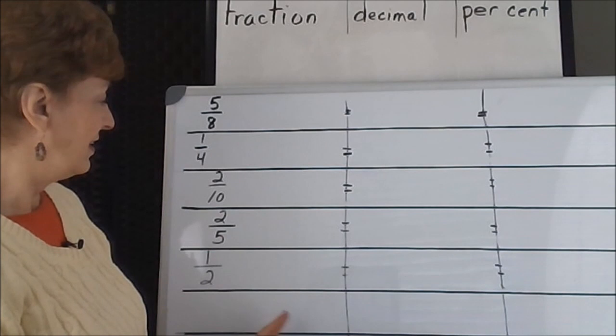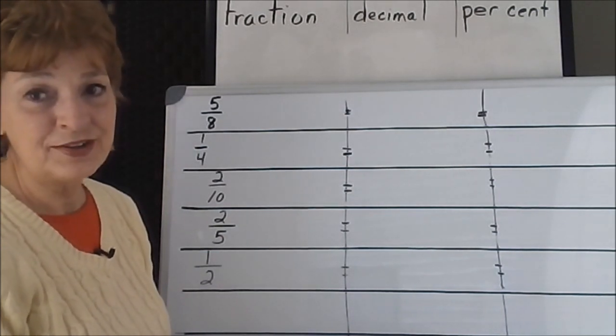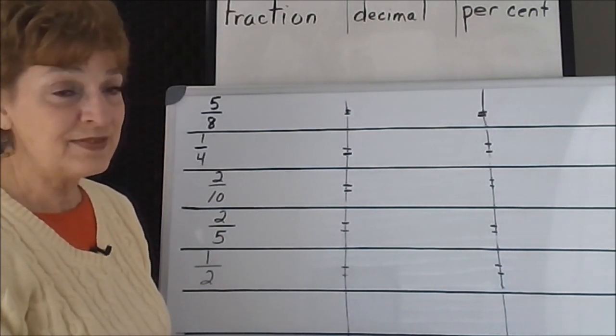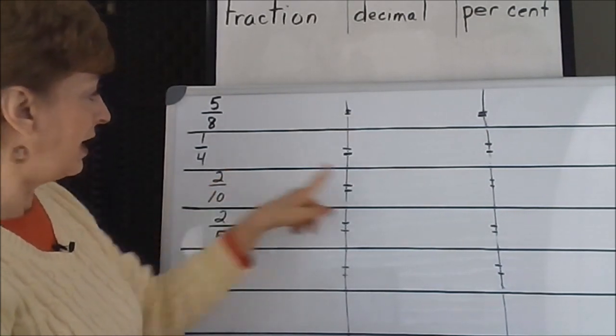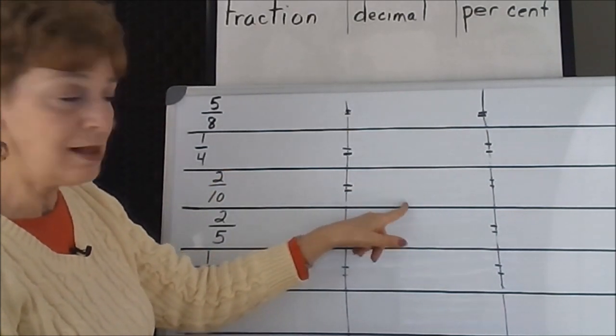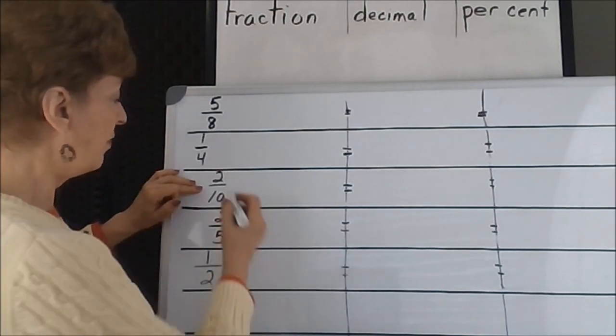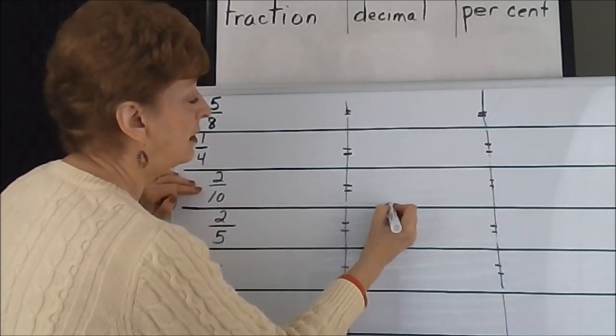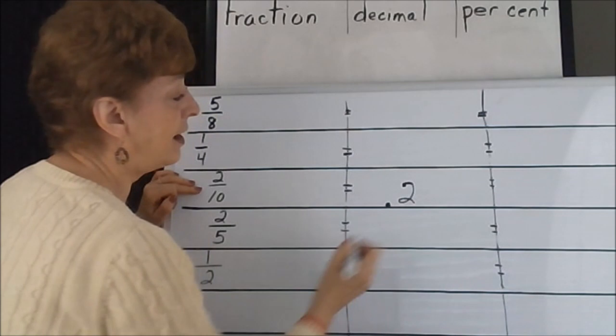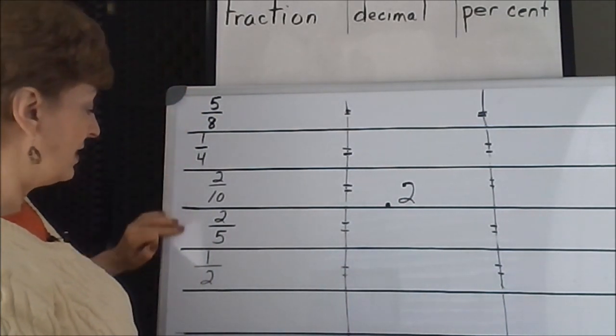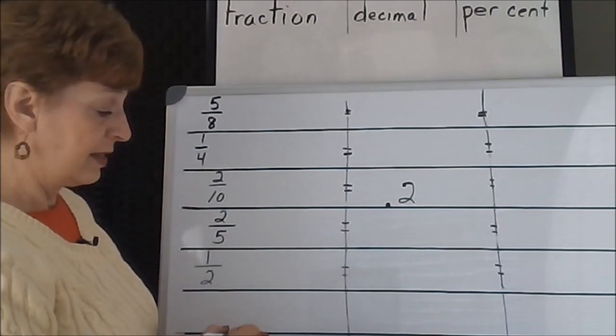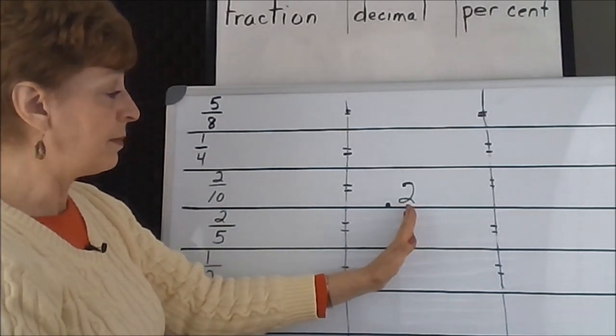These fractions have denominators that are not place value, except for this one, 2 tenths. We have a decimal tenth column, so this particular fraction could just be 2 in the tenths column. But the rest of these have denominators that don't have a column name.